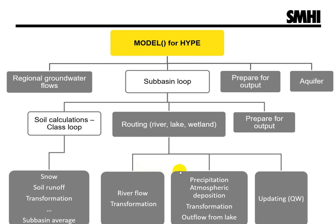Examples of processes are precipitation and atmospheric deposition, and nutrient transformation. For an outlet lake, interaction with floodplains is an additional process. An outlet wetland can be simulated instead of an outlet lake. The calculated outlet lake water level and outflow may be updated with observations.